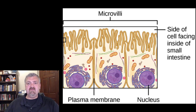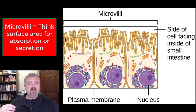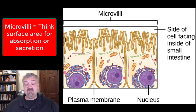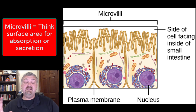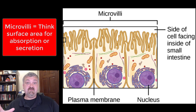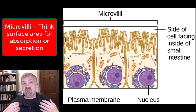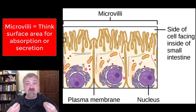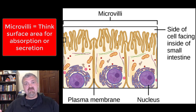Compare that to the microvilli. This is also an extension of the plasma membrane, but they're shorter. They just have microfilaments in them instead of hollow tubules. Their job is to increase surface area. So anytime a cell needs to move a whole bunch of material — either to absorb or secrete a large amount — you're going to see cells that have microvilli on them.